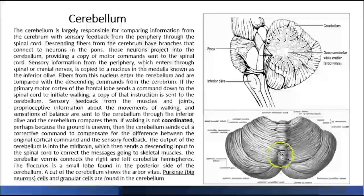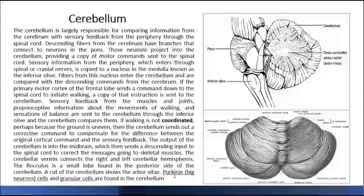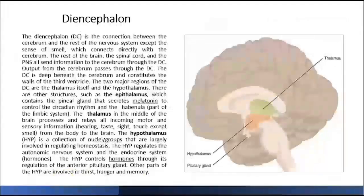The cerebellum helps us control equilibrium as well as coordination of movement. It contains very important cells such as the Purkinje cells, which are very large, as well as granule cells.